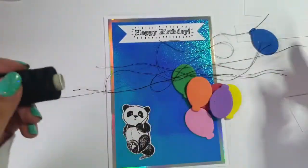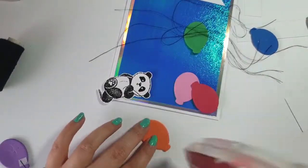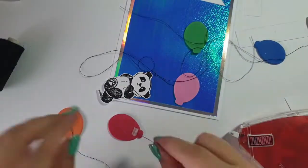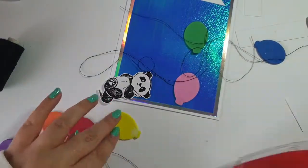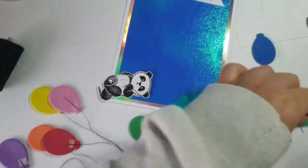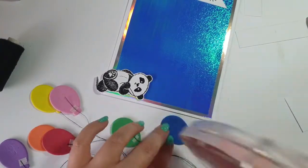Then I decided to get a little bit extra. I cut loads of black thread and then I'm going to use a little bit of double-sided tape on the back of each balloon. I stuck a piece of thread to every balloon so that it could actually look like the panda was holding them, so they were like a proper bunch. I just like making the cards a little bit more interactive rather than completely flat.